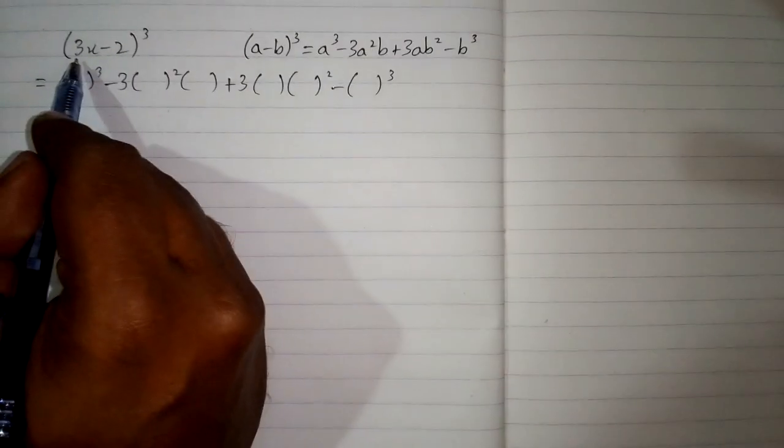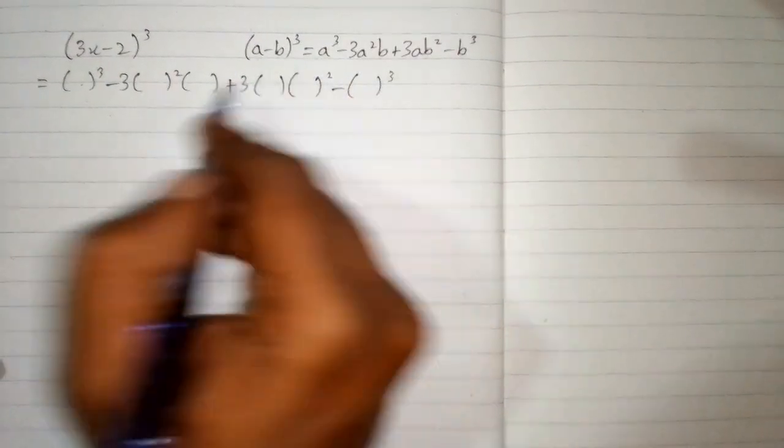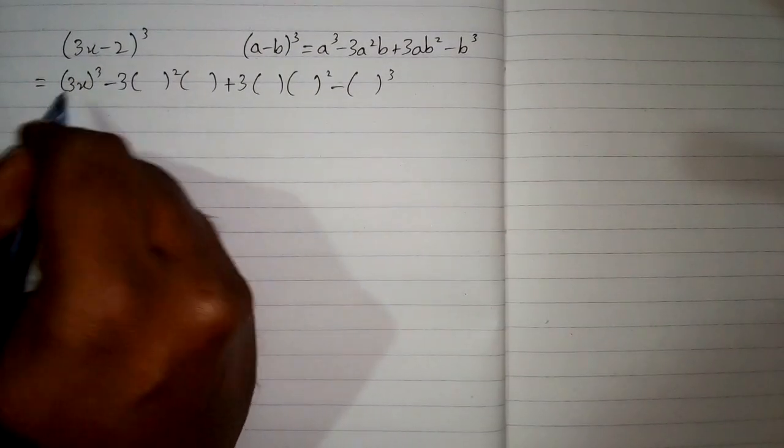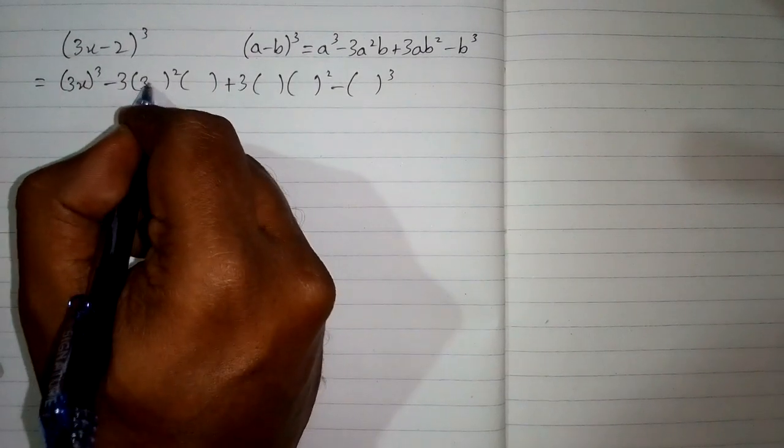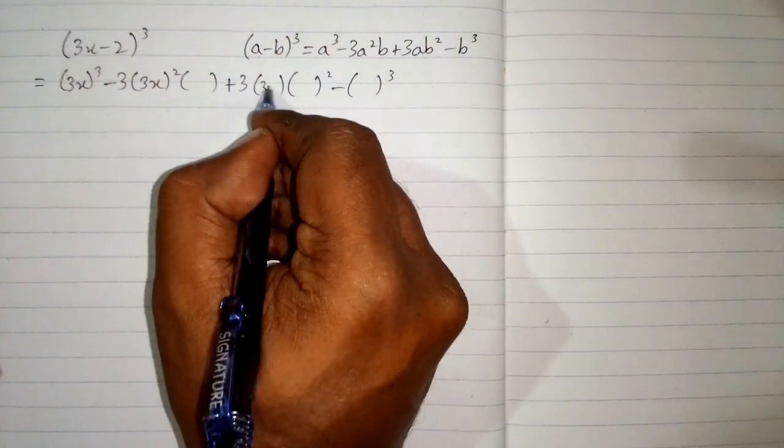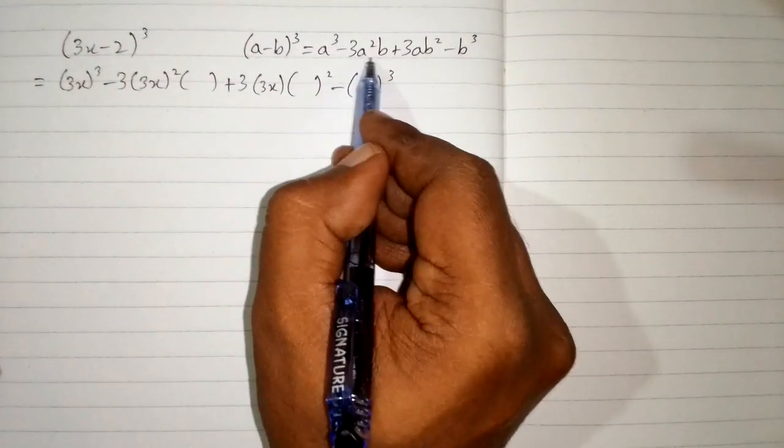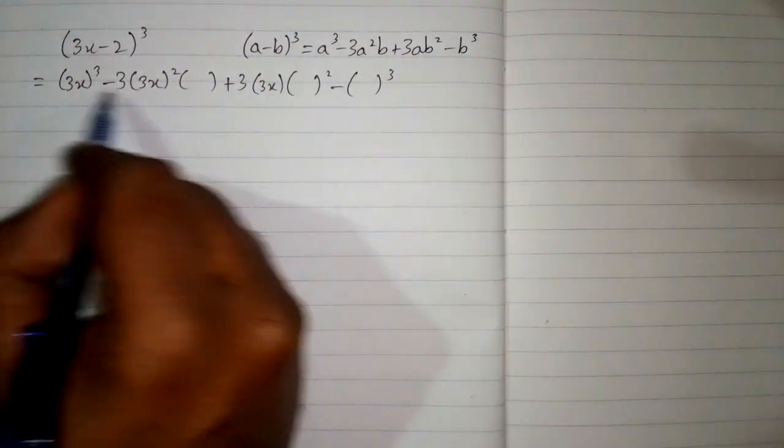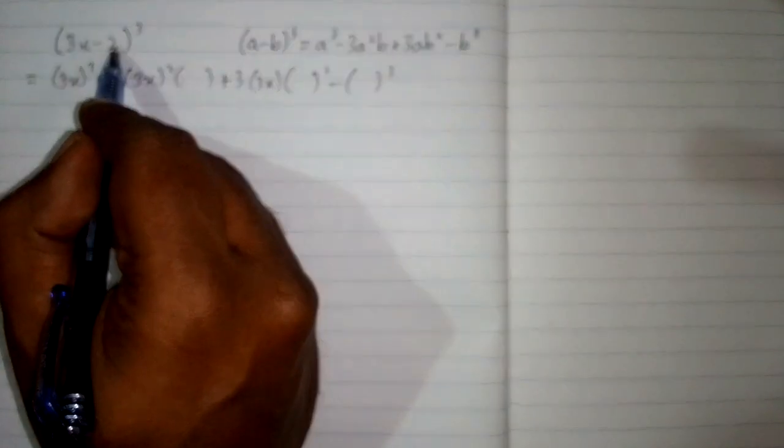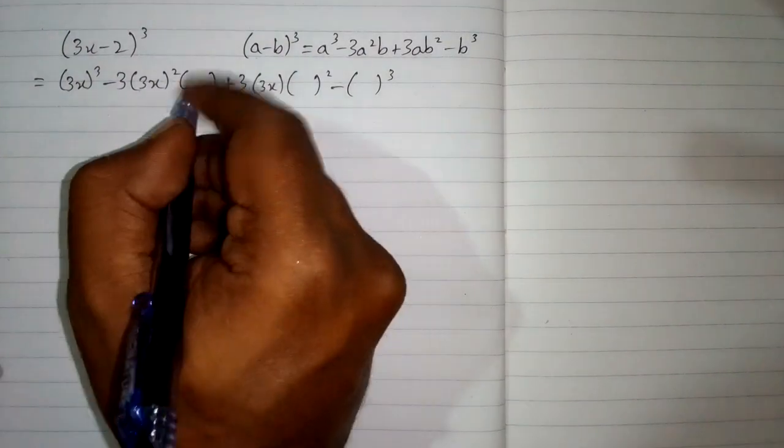Now we put the value of 3x in place of a. So we will put 3x over here and over here and over here because we have a in place of this 3x. And then we put the value of b which is 2 over here, over here and over here.